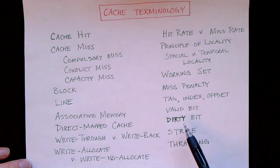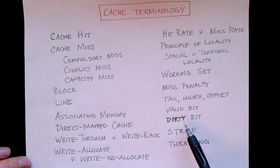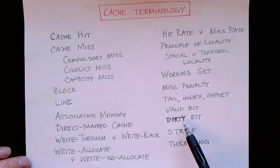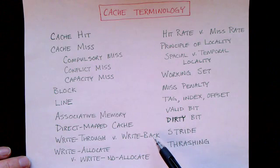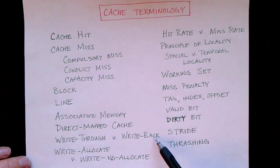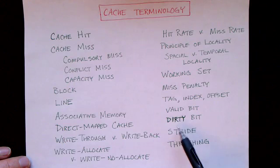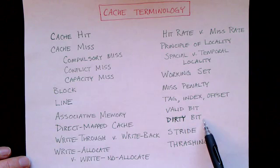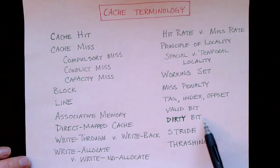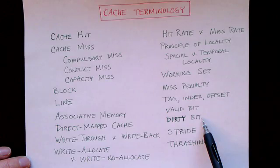The dirty bit indicates whether the block in the cache has been modified. If we have a write-back scheme where we're keeping the modified data in the cache without writing it through to main memory immediately, we need to keep track of the fact that the block has been modified. The dirty bit does this — it is set to indicate that the data in the block has been modified.